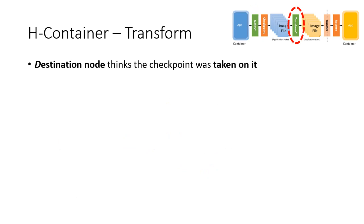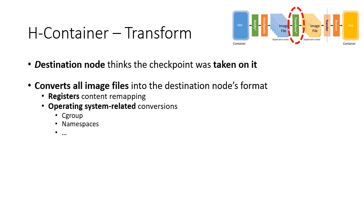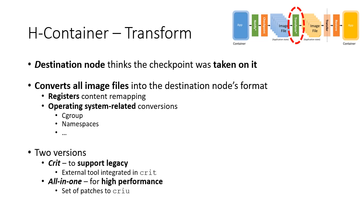The Transform stage completes the conversion to make the checkpoint suitable to be restarted on the destination node. Transform converts the checkpoint image files into the format of the destination node with another ISA. Specifically, it finalizes register mapping and converts all operating system-related state information — basically anything related to cgroups and namespaces. Due to performance reasons, we implemented two versions of CRIU: the first implements the transform stage into CRIU's CRIT tool, targeting legacy support and working in parallel to any CRIU installation. The second, called all-in-one, is a patch to CRIU itself, so it doesn't support legacy installations but its overhead is minimal.